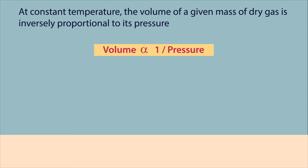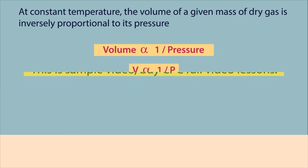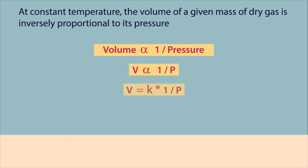If V is the volume of a certain mass of gas under pressure P, at constant temperature, according to Boyle's Law, V is inversely proportional to pressure. V is equal to K multiplied by 1 over P, where K is the proportionality constant. Hence, the product of pressure and volume is constant: P into V is equal to K.